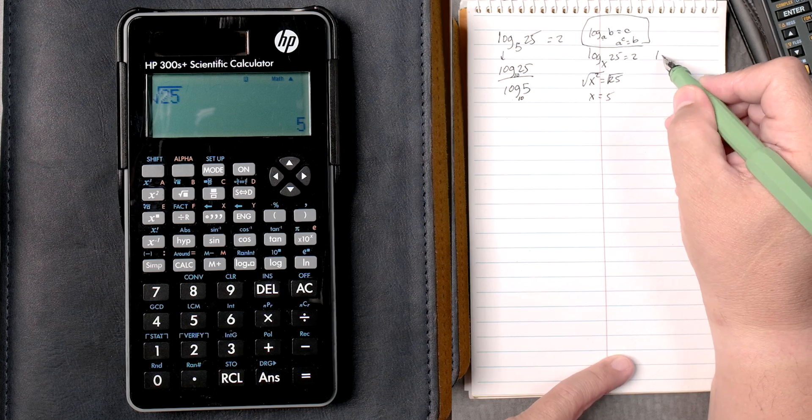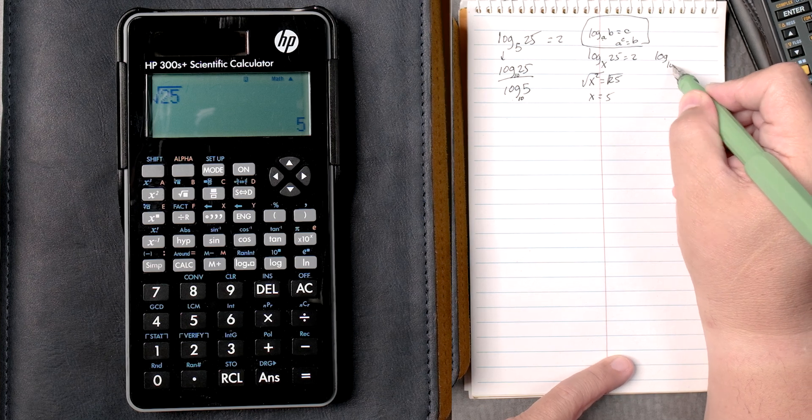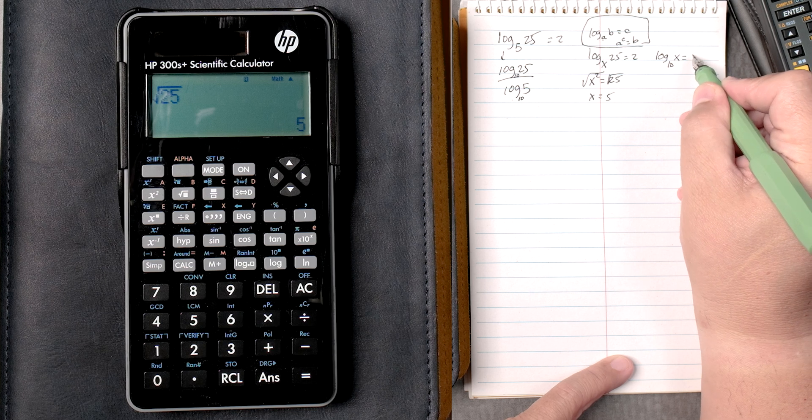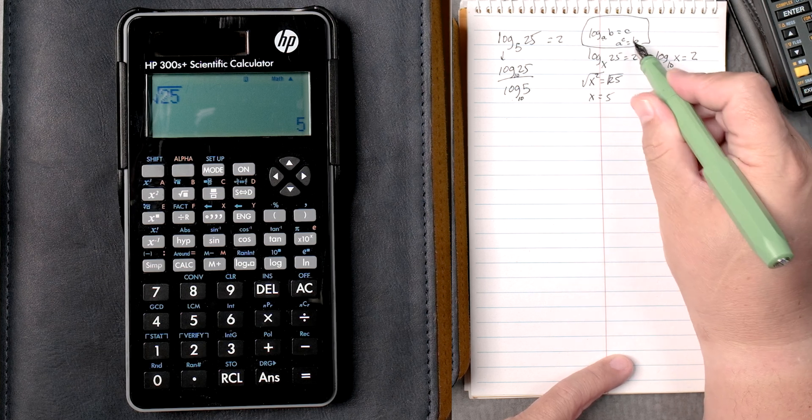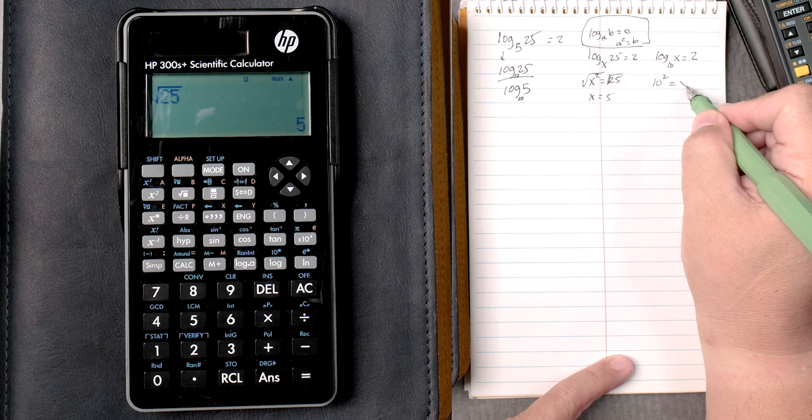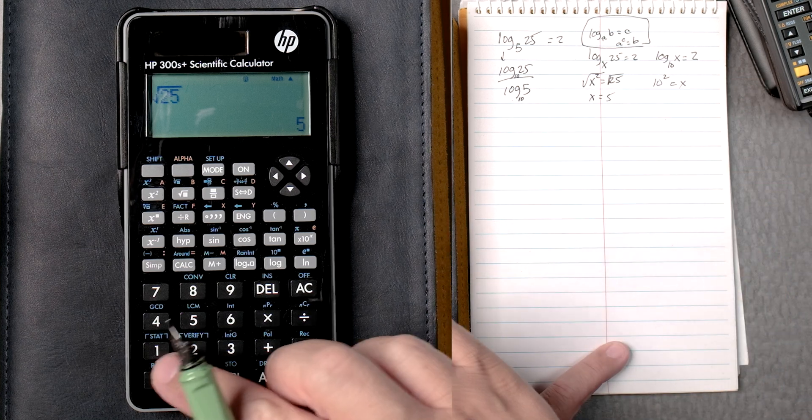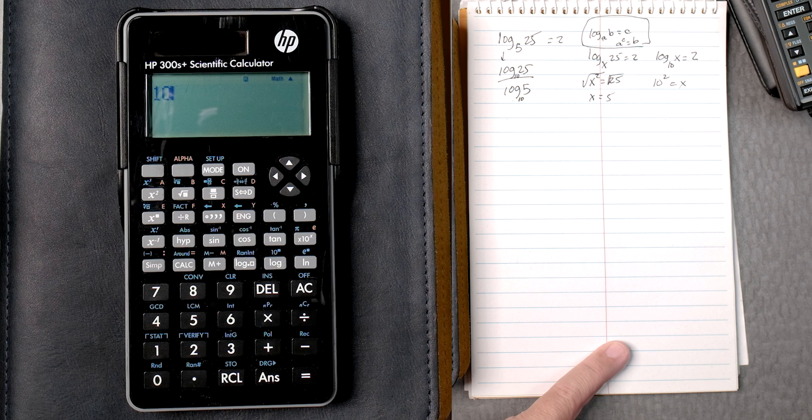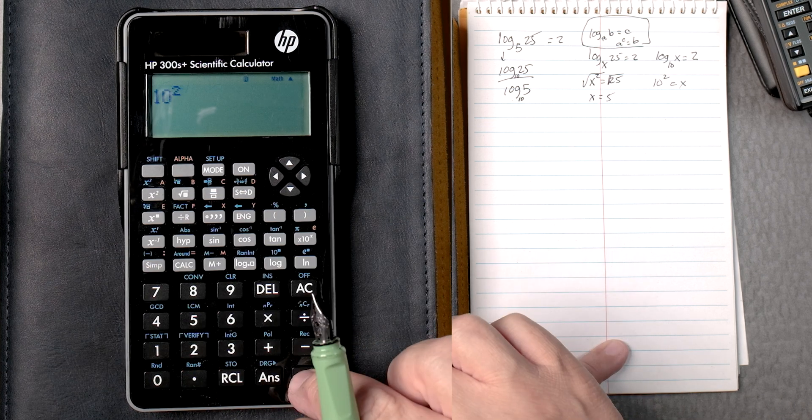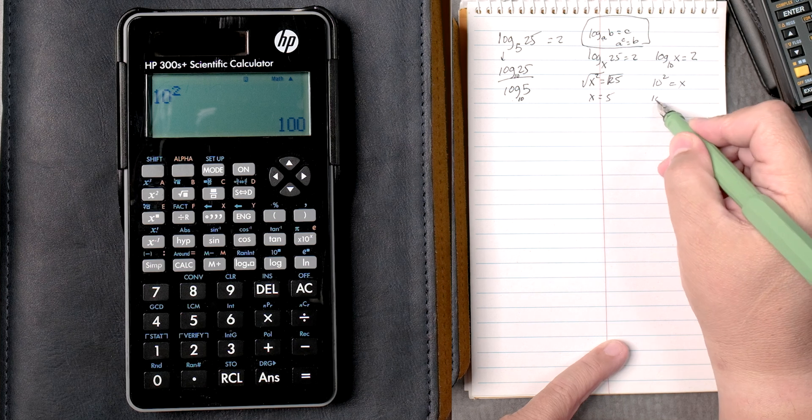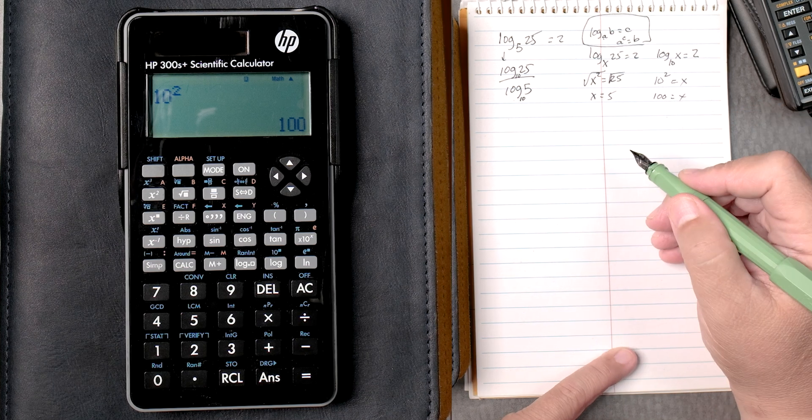Then let's say the log of base 10, x equals 2, which is 10 squared, using this rule, 10 squared equals x. So 10 to the power of 2 equals 100. I think we knew that already, but great.